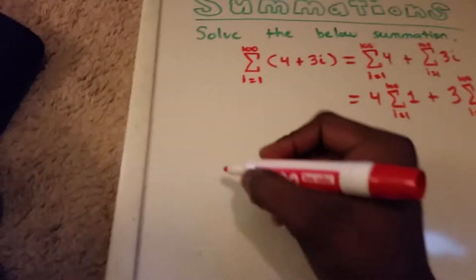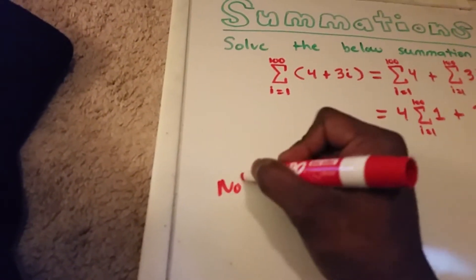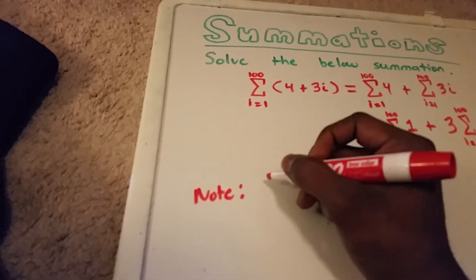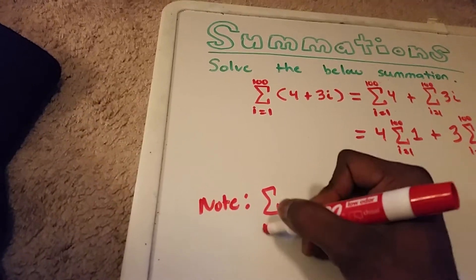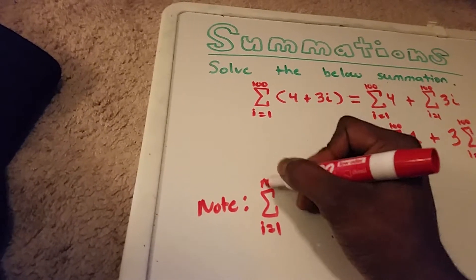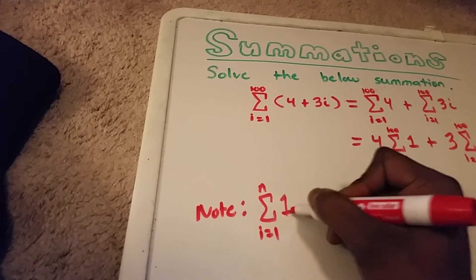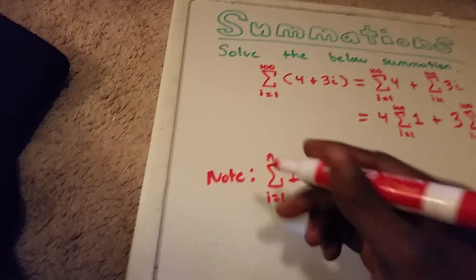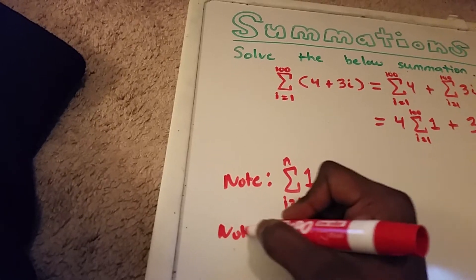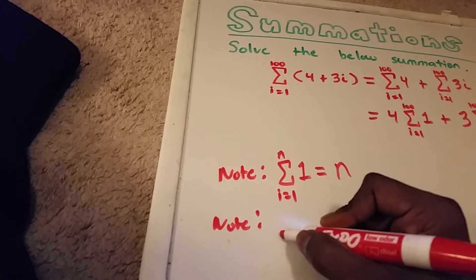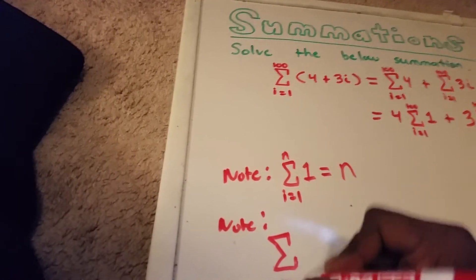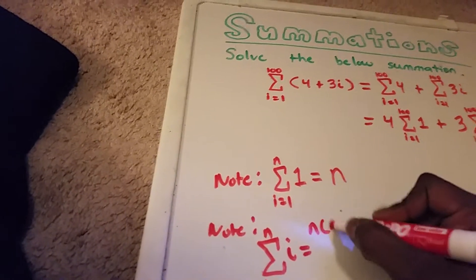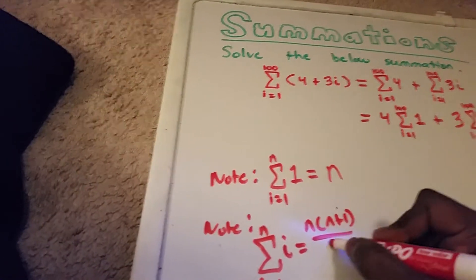Now we'll put a little note here. There's a formula: the summation from i equals 1 to n of 1 is equal to n. And another formula: the summation from i equals 1 to n of i is equal to n times n plus 1, divided by 2.